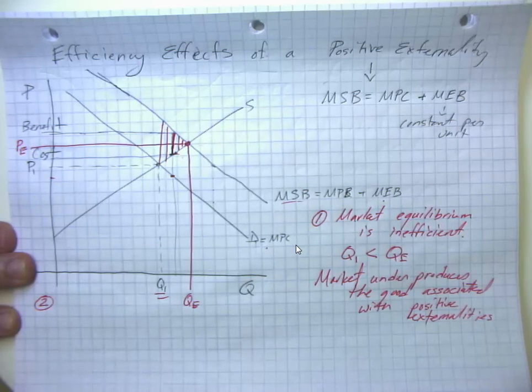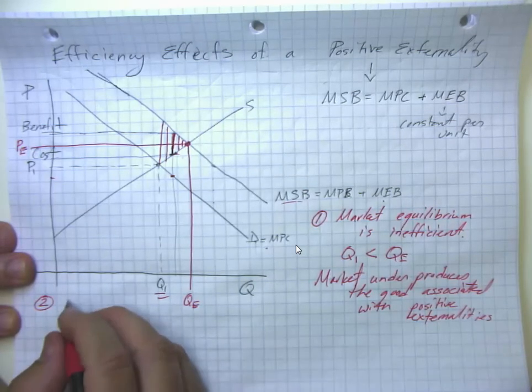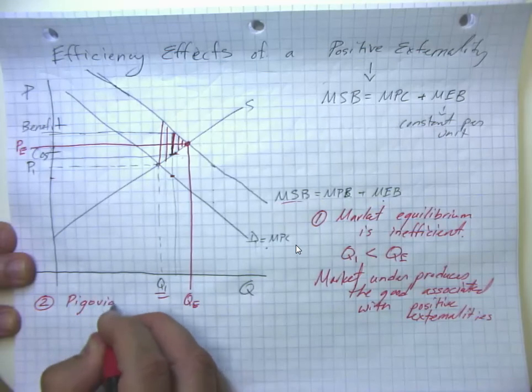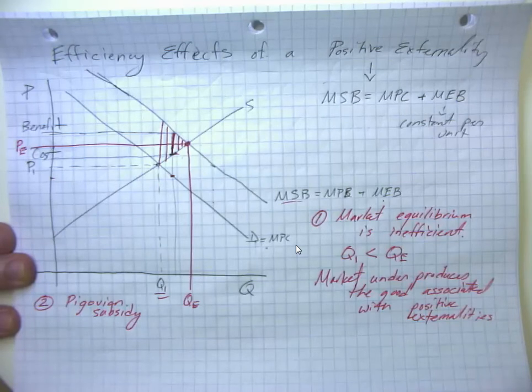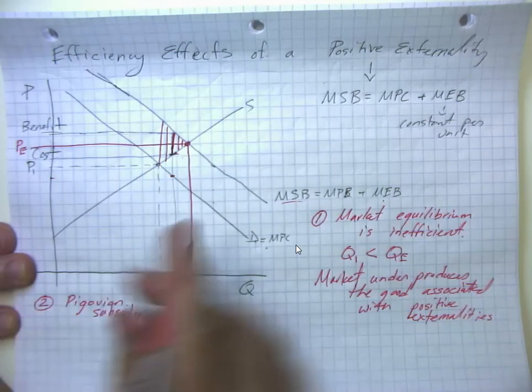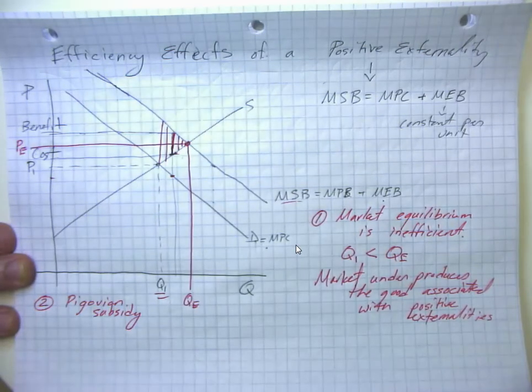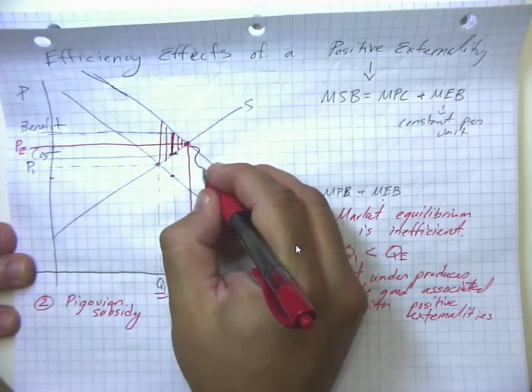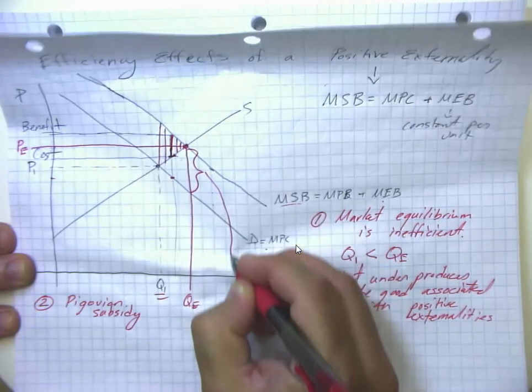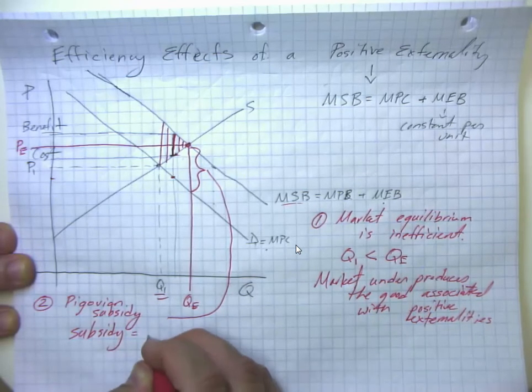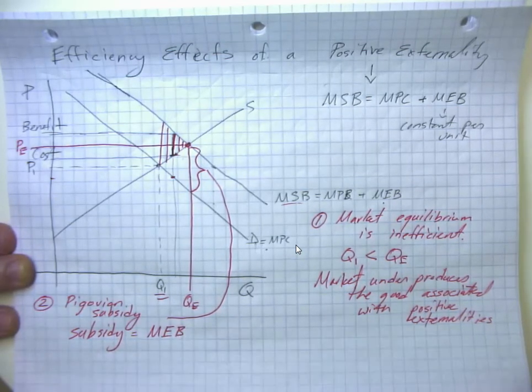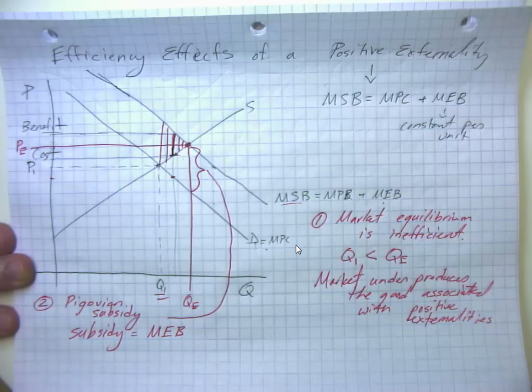What are we going to do about this? Well, we can think about a Pigovian subsidy. The typical policy response to a negative externality is to tax people to discourage them from undertaking the transaction. If we have a positive externality, we want to encourage people to undertake the transaction because they're not doing enough of it on their own. In particular, if we have this nice constant marginal external benefit, the subsidy should be equal to the marginal external benefit. This subsidy is actually going to increase economic efficiency.